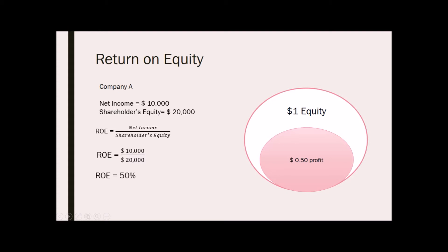ROE is more than a measure of profit — it's a measure of efficiency. A rising ROE suggests that the company is increasing its ability to generate profit without needing much capital, and indicates how well a company's management is deploying shareholders' capital. In other words, the higher the ROE, the better. However, falling ROE is usually a problem. It is important to note that if the value of shareholders' equity goes down, ROE goes up. Thus, write-downs and share buybacks can artificially boost ROE. Likewise, a high level of debt could artificially boost ROE, since the more debt a company has, the less shareholders' equity it has, and the higher its ROE is.